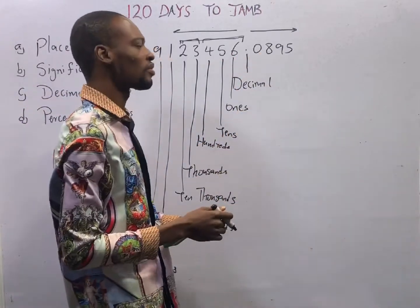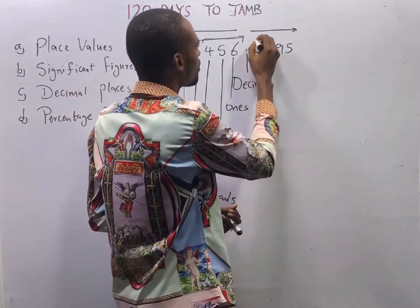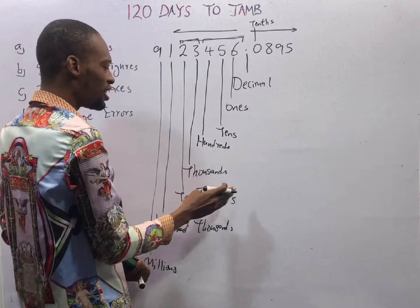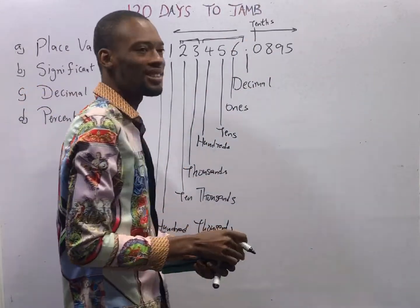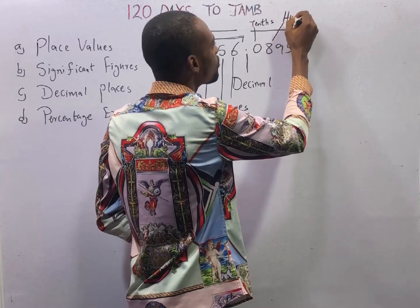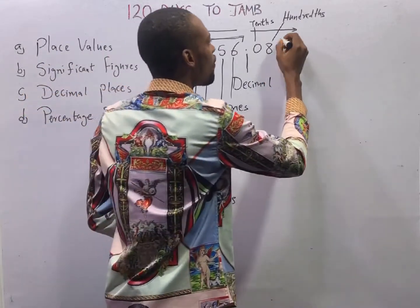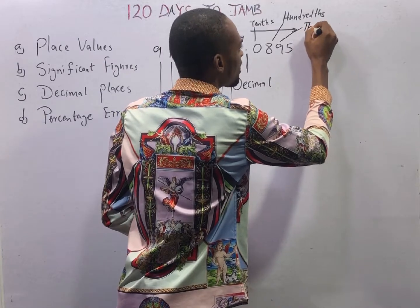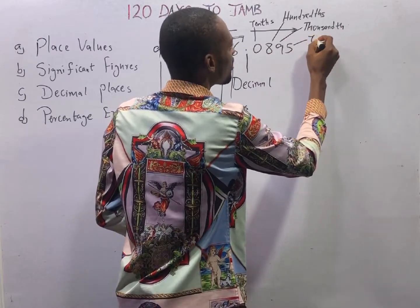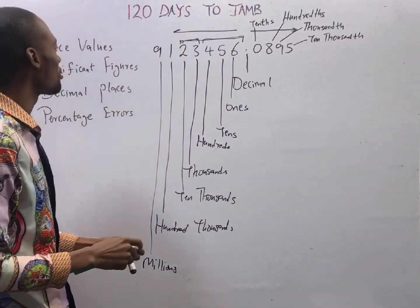How about after the decimal point? After the decimal point, the first digit you have has a place value of tenths — not 10, but T-E-N-T-H-S. Then the next one is hundredths — H-U-N-D-R-E-D-T-H-S. You add 'TH' to them. Then next is thousandths — 1,000th. Then 10,000ths. Then 100,000ths, and so on.